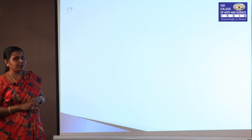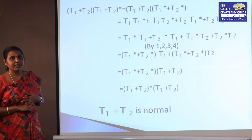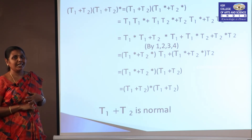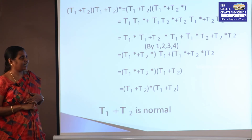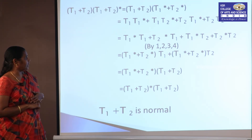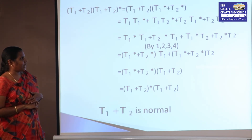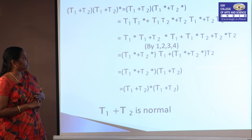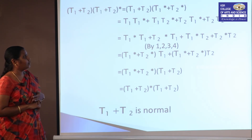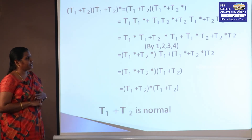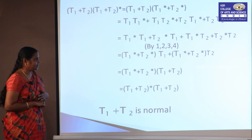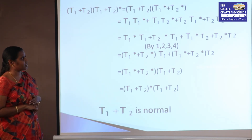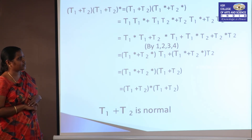To prove T₁ + T₂ is normal, we compute (T₁ + T₂)(T₁ + T₂)*. The second bracket becomes T₁* + T₂*, and expanding gives T₁T₁* + T₁T₂* + T₂T₁* + T₂T₂*. Substituting equations 1, 2, 3, and 4, we get T₁*T₁ + T₂*T₁ + T₁*T₂ + T₂*T₂.